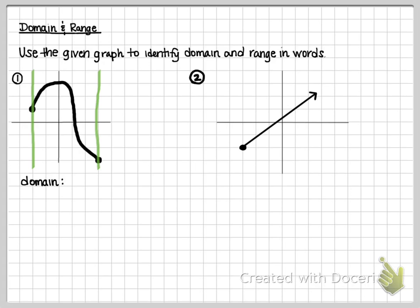I would say that the graph starts at negative 2, and it goes through, because it actually hits that point, 3. So negative 2 through positive 3.